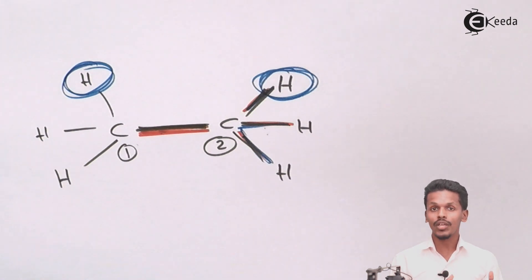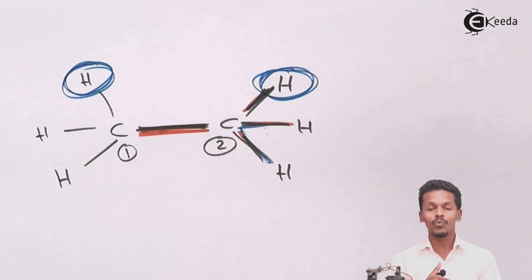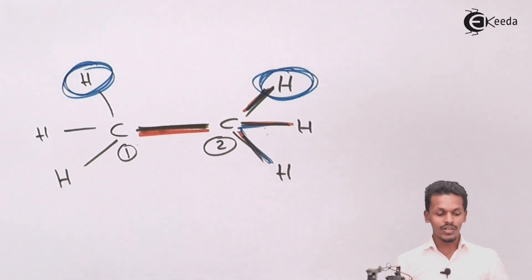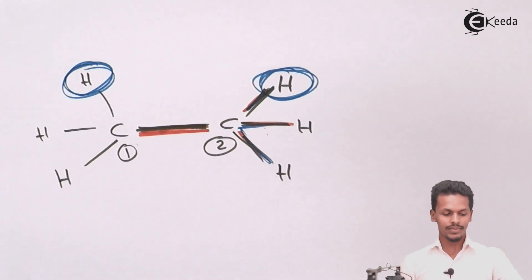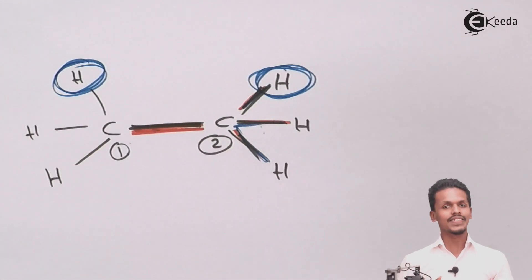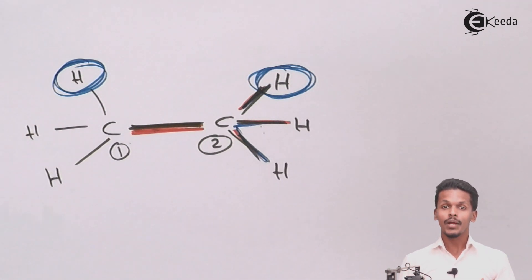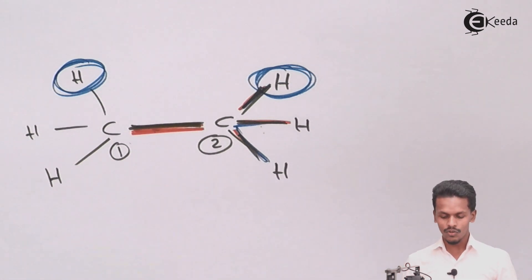This will be much easier to understand through projections. When we look at projections, it becomes very clear what is staggered and what is eclipsed. In the staggered conformation, both hydrogens on the two carbon atoms stay far apart from each other when we rotate the carbon-carbon bond.